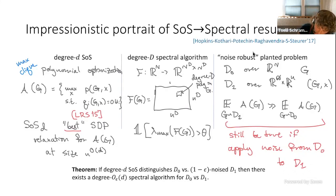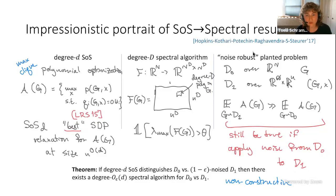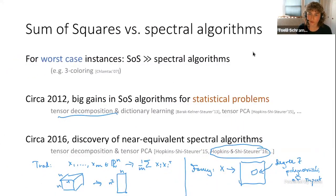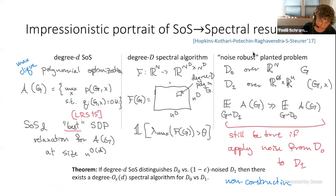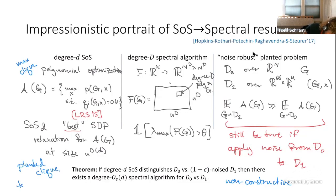The proof is non-constructive — it's not like I produced the spectral algorithm for you to run by hand, and it's furthermore not even guaranteed that the same spectral algorithm will work for every value of n. But still, we are explaining with a theorem this seeming equivalence that we observed in practice. This setup is rich enough to capture several problems we care about — planted clique, tensor PCA, community detection, et cetera.